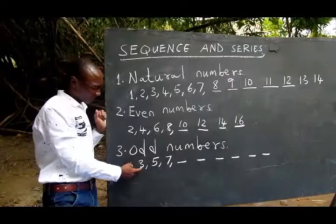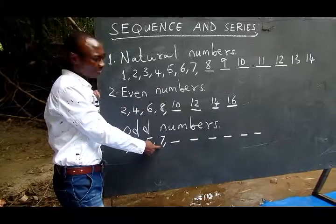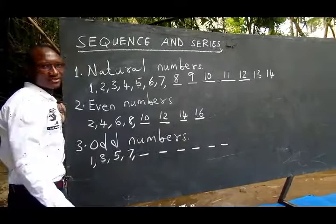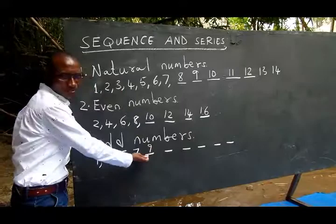From 1 to 3, 2 is adding. 3 to 5, 2 is adding. 5 to 7, 2 is adding. And also here, 2 will be adding to get the next number. 7 plus 2, we get 9. 9 plus 2, we get 11.